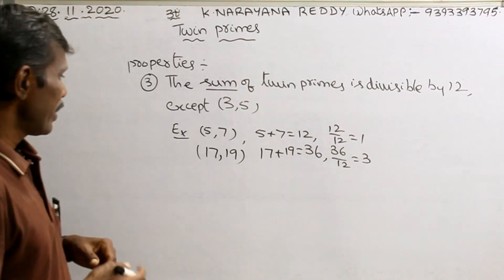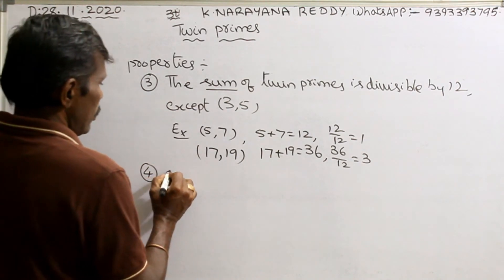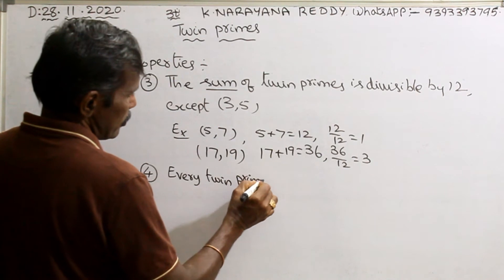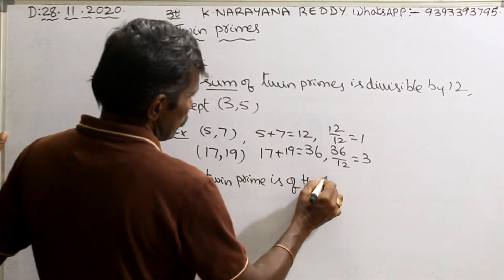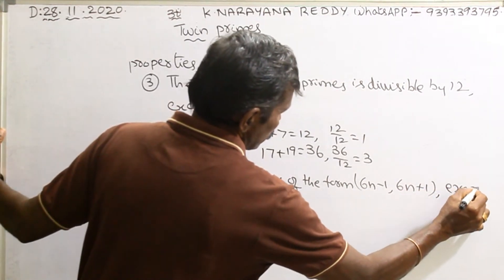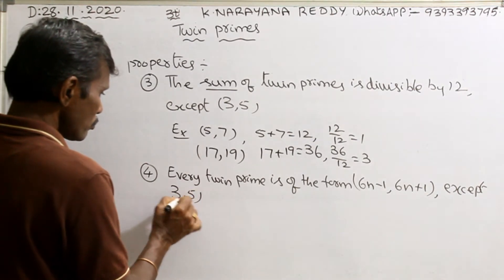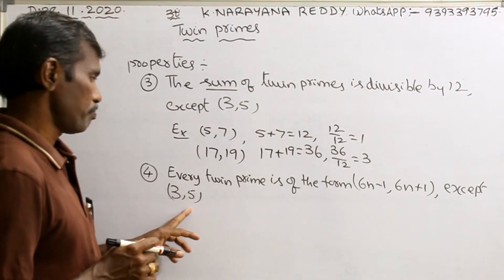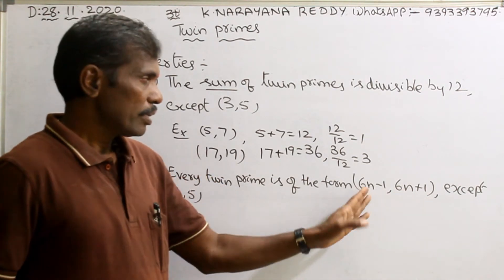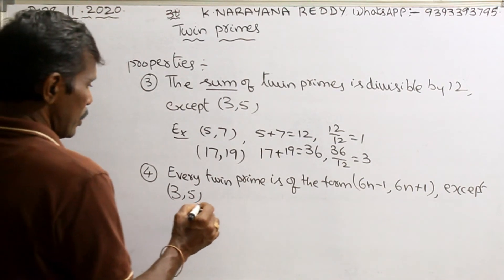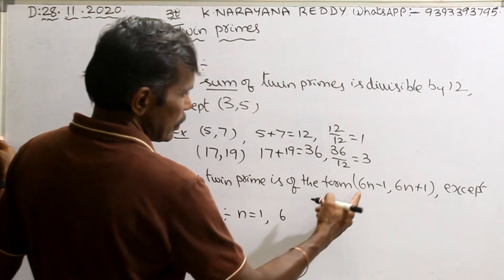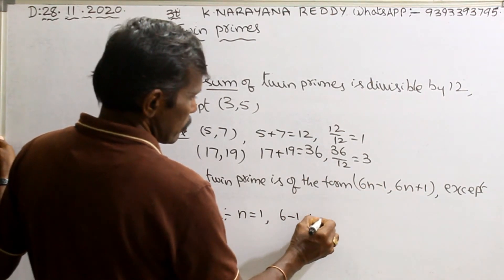Another property: every twin prime is of the form 6n−1 and 6n+1, except (3, 5). All remaining twin primes are in this form. Here n is a natural number. For example, n equals 1 means 6×1−1 and 6×1+1, that is 5 and 7.